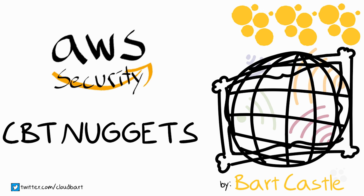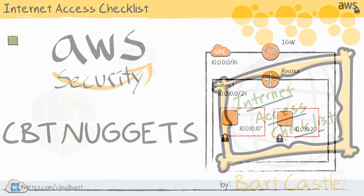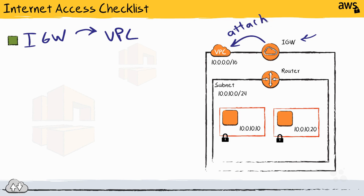In all of my courses, I always go through a simple internet access checklist where we look at the four key elements of getting yourself onto the internet and receiving traffic from the internet when running EC2 instances in a virtual private cloud. The first item on our checklist is: do we have an internet gateway attached to our VPC? It is really critical to remember that there is an additional step called attaching the gateway to the VPC. Simply creating a gateway just brings it into existence in your account — you have to associate it with the VPC before that internet gateway path is available to VPC-based traffic.